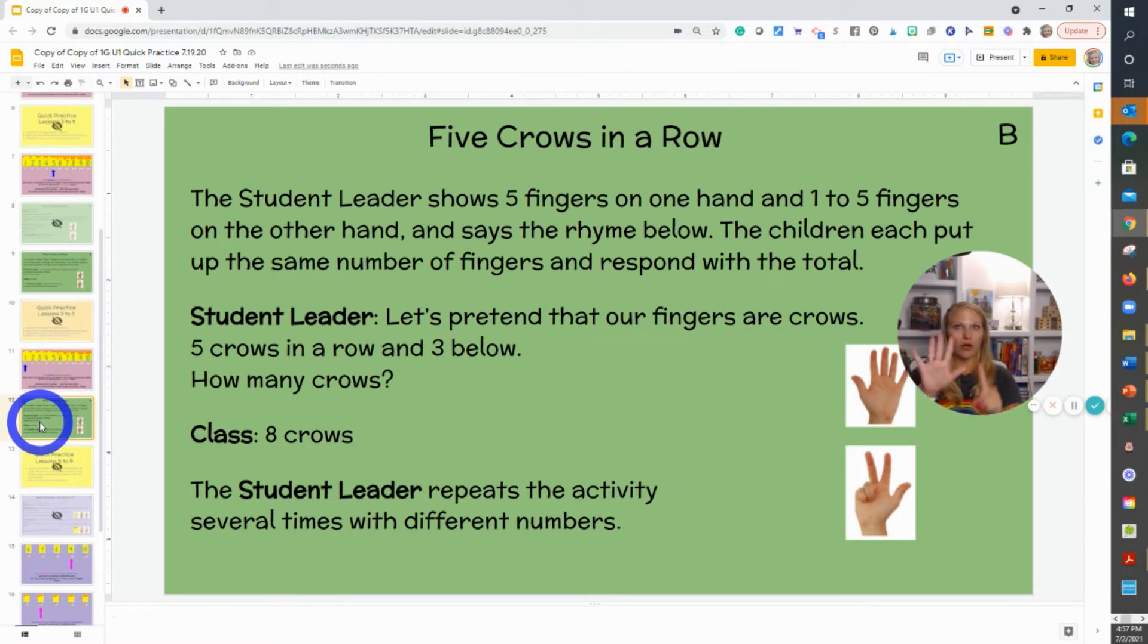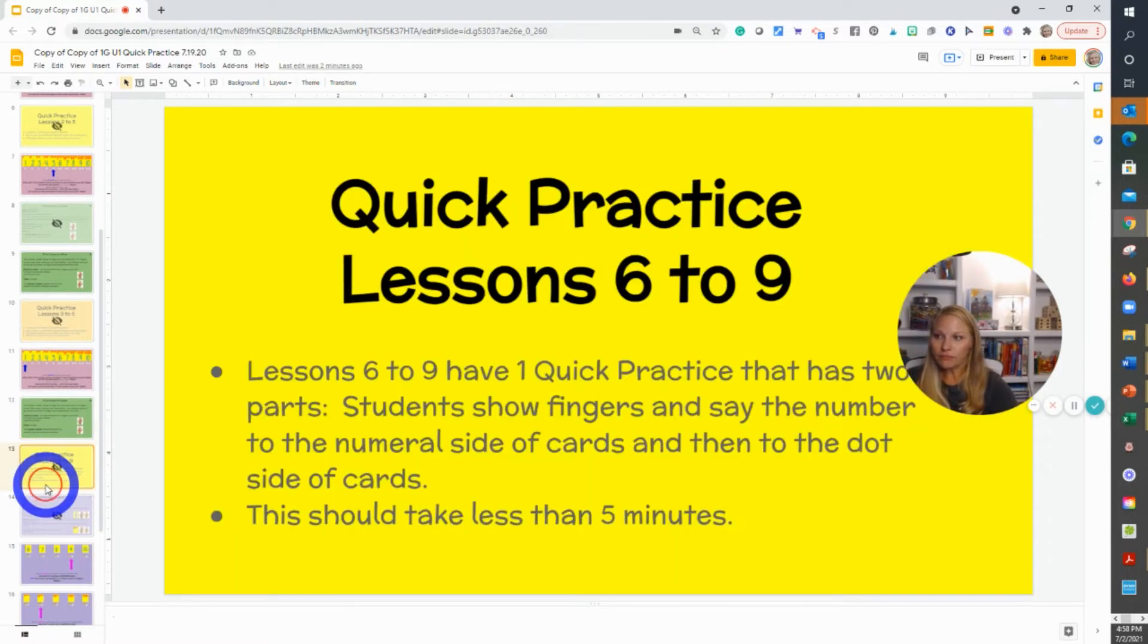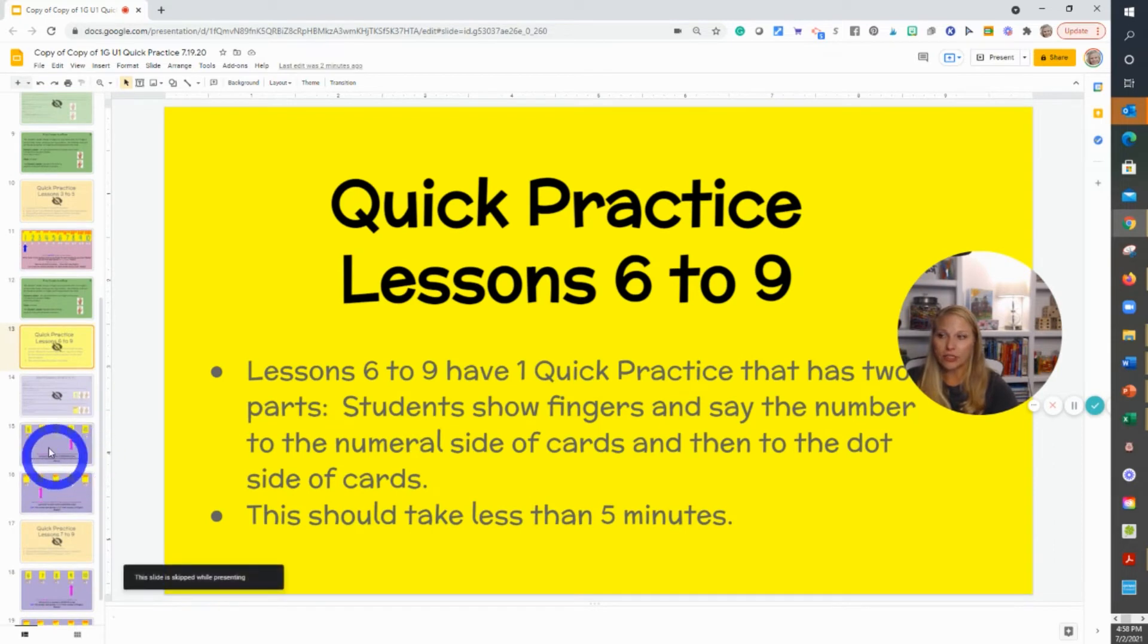Five crows in a row, four below, nine. So in the beginning you can do it in order: one below, six, two below, seven. It's subitizing that five group and then the extras. Then they can start just doing whatever the student leader wants to do to go through several of them, but the whole class will do it together.